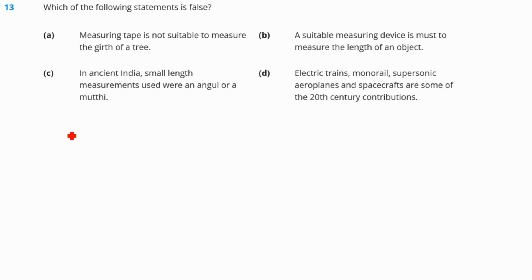Question 13. Which of the following statement is false? Measuring tape is not suitable to measure the width of a tree. Measuring tape is suitable. It depends on the width of the tree. If the width of the tree is too big, no. But if the width is small, then it can be measured. So this is a false statement. A suitable measuring device is a must to measure the length of an object. True. In ancient India, small length measurements used were an angul or a mutti. Yes. This is also true. Electric train, monorail, supersonic aeroplanes and spacecraft are some of the 20th century contribution. This is also true. So our correct answer is option number A.